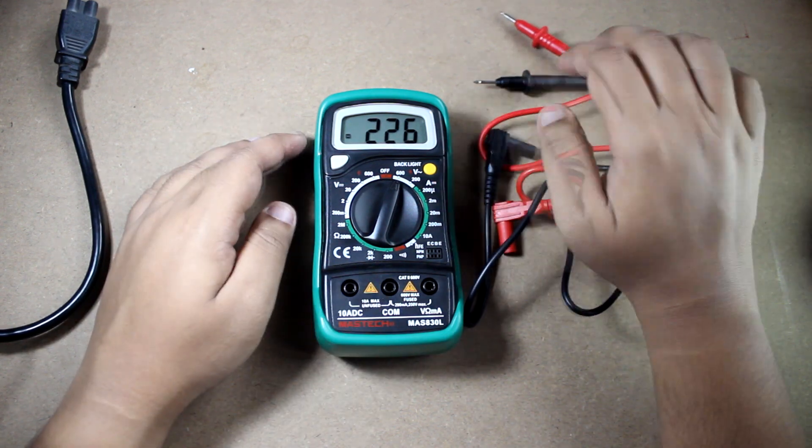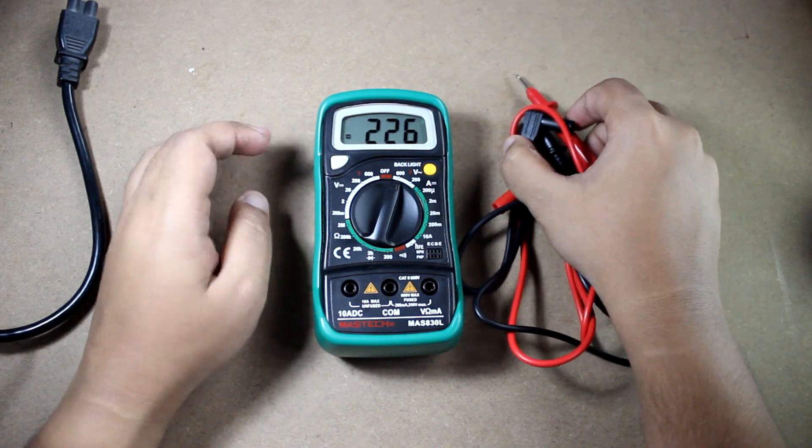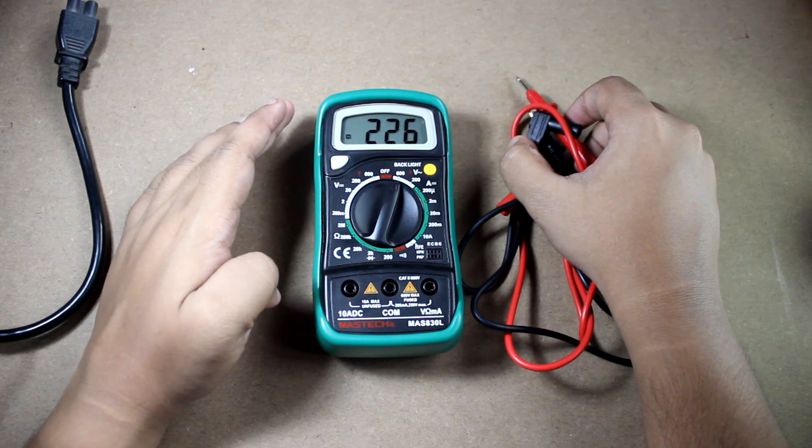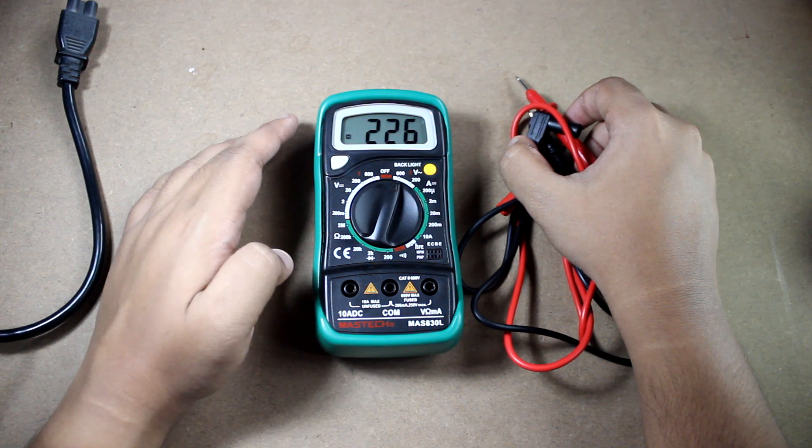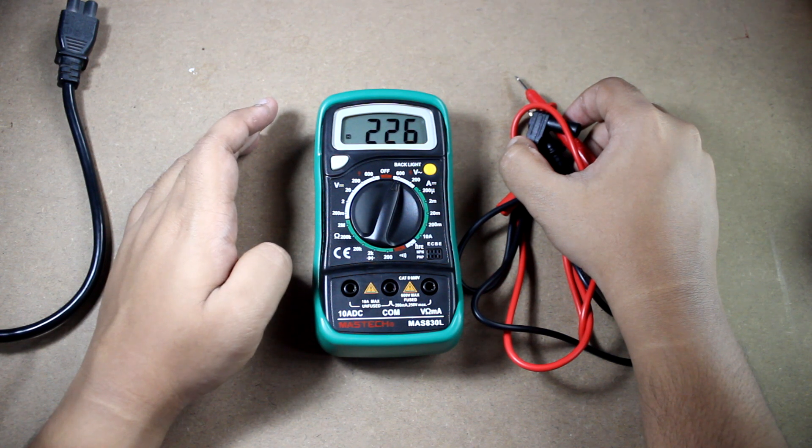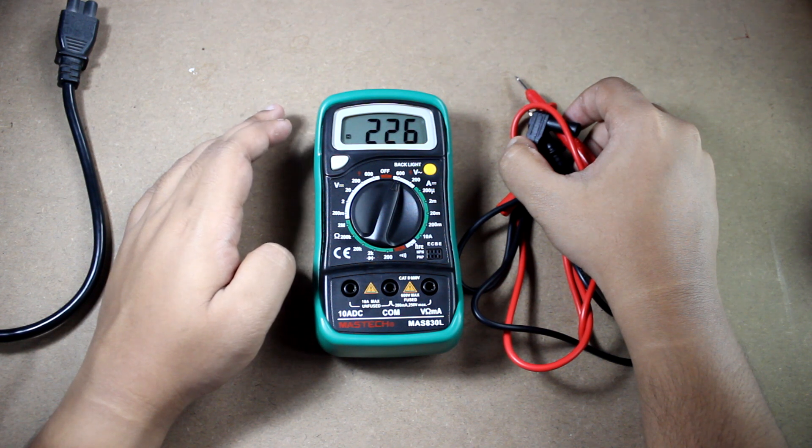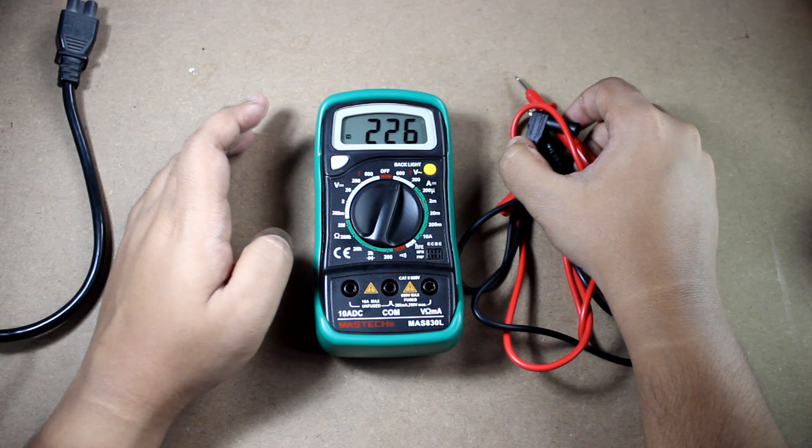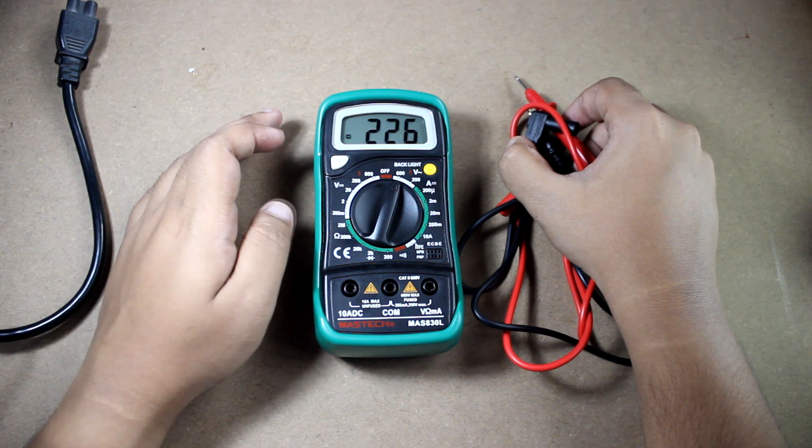So that's how you can take AC voltage reading from a multimeter. Please take care about what you are doing and follow the steps carefully, otherwise it would make some damage. That's it in this video.